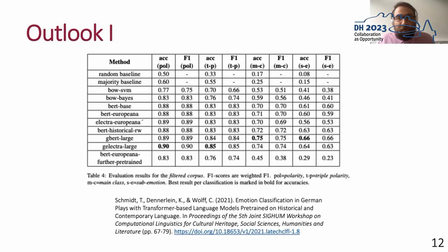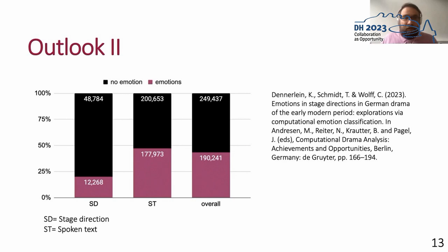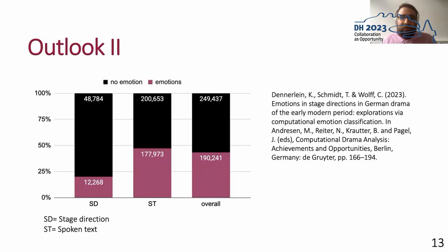If you are interested in other aspects of our project, we reference certain papers at the end of this presentation. For example, in machine learning results, we achieved accuracies of up to 73% for sub-emotion classifications — single-label classification for 14 classes with large transformer-based language models. We also explored possibilities of optimization for historical language. On the application side, when we apply our trained models on play texts, we predominantly focus on genre analysis. A small snippet of research comparing stage directions with spoken text shows that applying our trained models on a corpus of over 200 plays identified that spoken text includes significantly more emotions than stage directions.